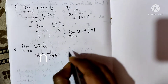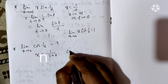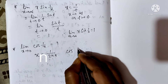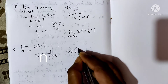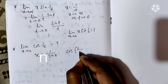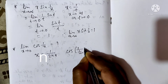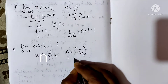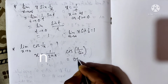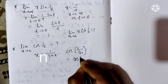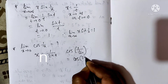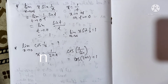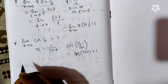Then cos(1/x) equals cos(1/(1/(2nπ))) equals cos(2nπ), which equals 1.